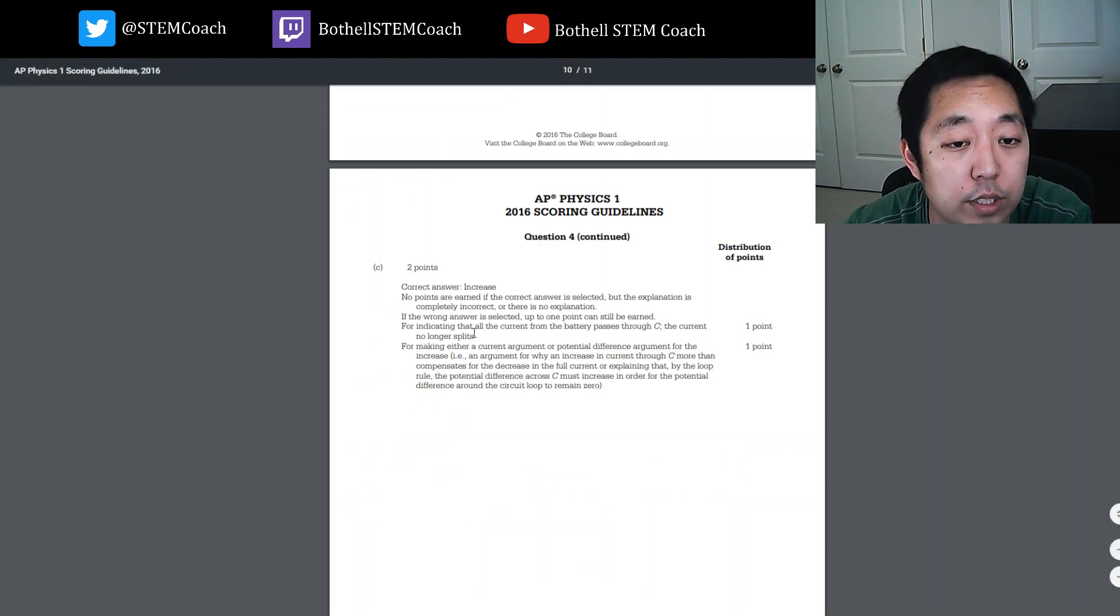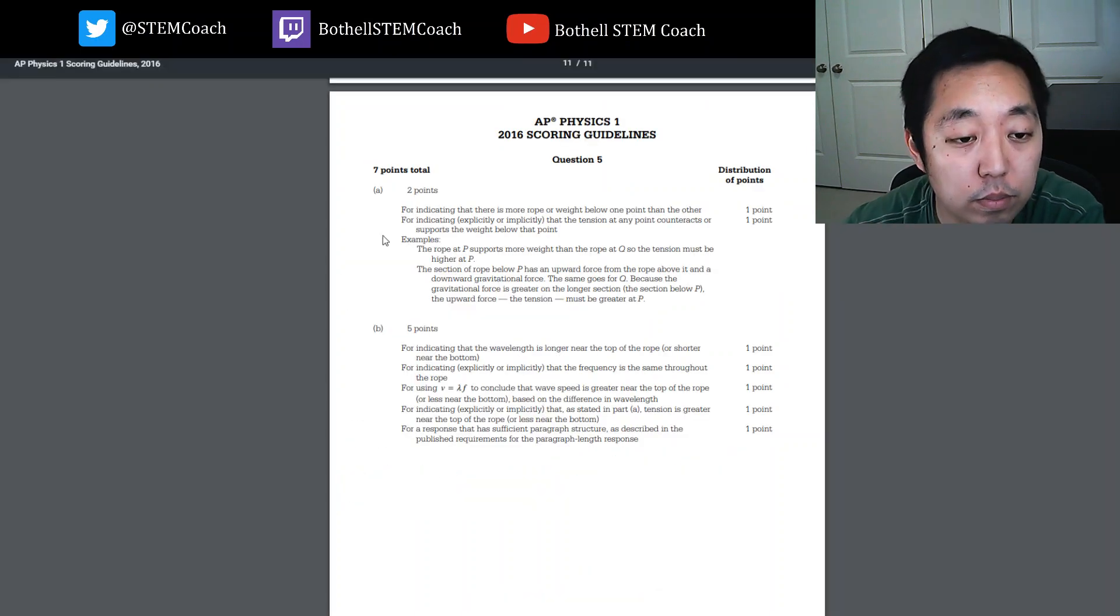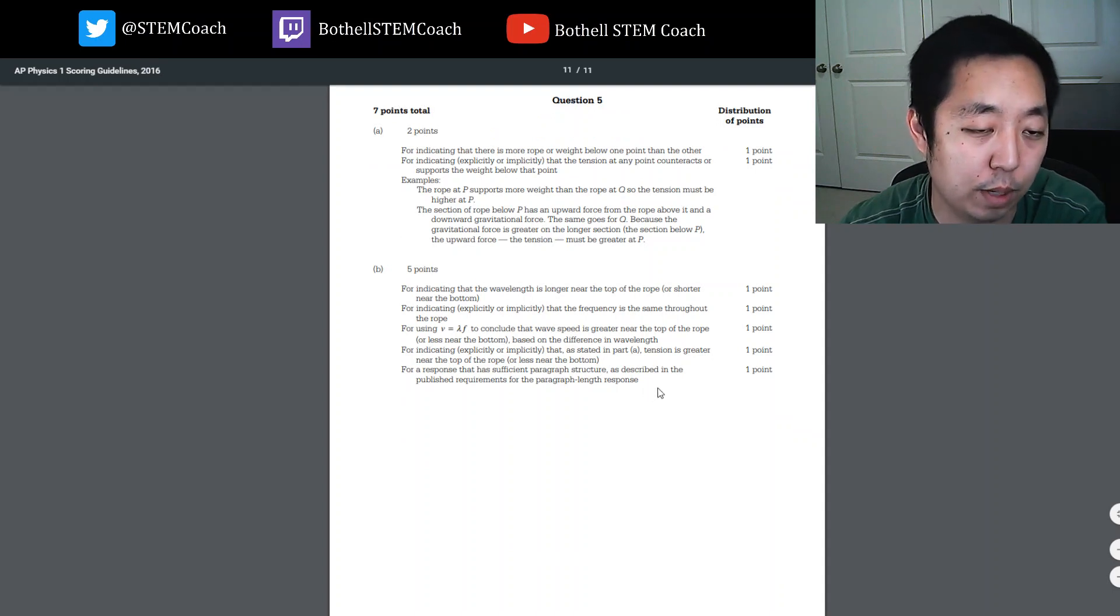That was really short on the last question, so let's just take a look at this. For indicating there's more rope or weight below one point than the other. For indicating that the tension at any point counteracts the weight below that point. I kind of did it with the pictures. I didn't write it out. For indicating the wavelength is longer near the top of the rope. For indicating the frequency is the same throughout the rope. I did that. For using V equals lambda F to include the wave speed. Indicating that as stated in A, the tension is greater near the top of the rope. For a response, a sufficient paragraph structure is described in published requirements for a paragraph length response. Man, I don't know what this last one even means. I probably should read that to be of more advice to you guys.